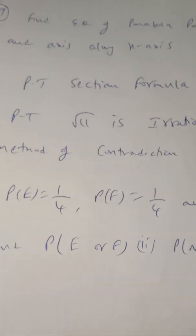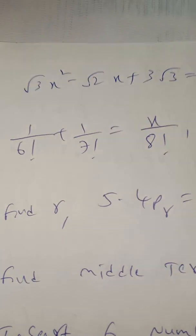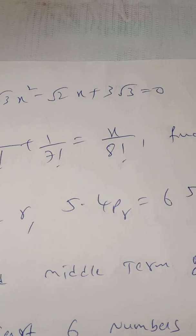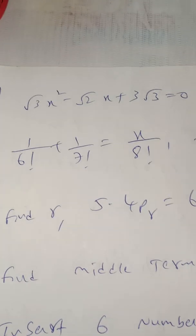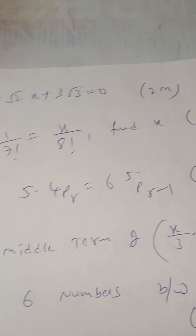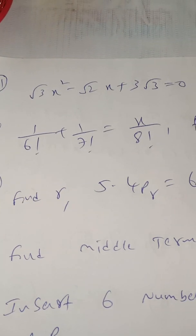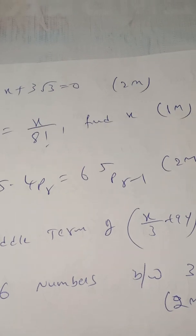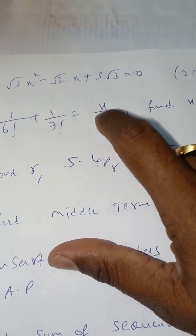A compulsory question from quadratic equations: solve something like 3√3 x² − √2 x + 3√3 = 0 or a similar model. Also a very simple 1-mark question: if 1/6! + 1/7! = x/8!, find the value of x. A shortcut: the answer is 8² = 64. If 10 were given instead, the answer would be 10² = 100.